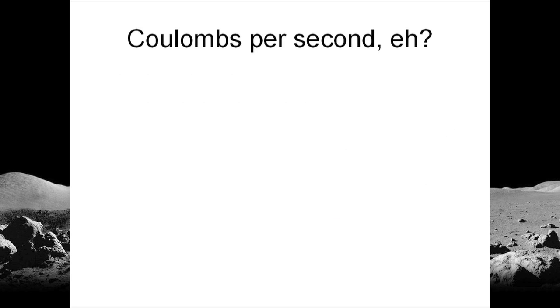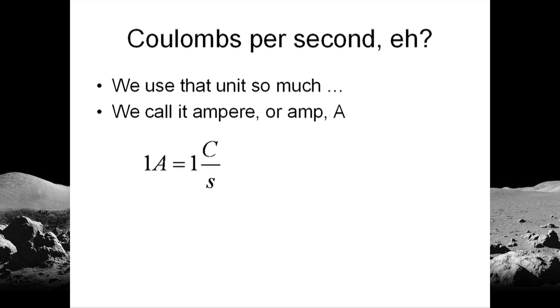That unit, coulombs per second, we use that so often that we gave it a name of its own. We call that the ampere, or amp, represented with an uppercase A. A current of one amp is a current of one coulomb per second.